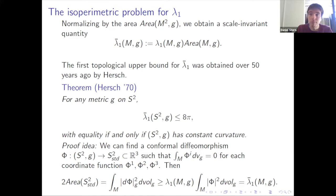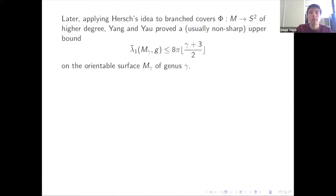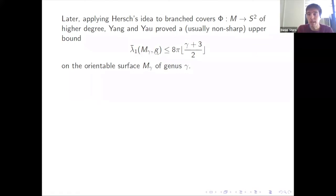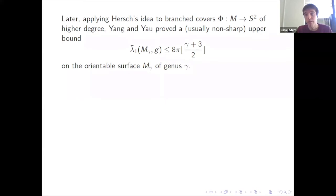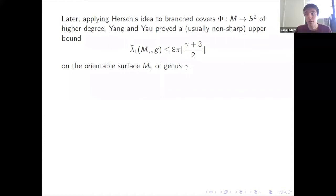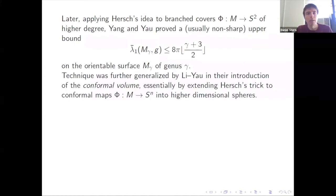This is true not just for S2. Applying a variant of Hersch's idea — looking at branched covers from a higher genus surface into S2 — Yang and Yau proved a bound which tells you that lambda_1 bar for a surface of genus gamma is bounded above linearly in terms of the genus. These are bounded on any orientable surface, and also on non-orientable surfaces; for the non-orientable analog of Yang-Yau, see work by my collaborator Misha Karpukhin.